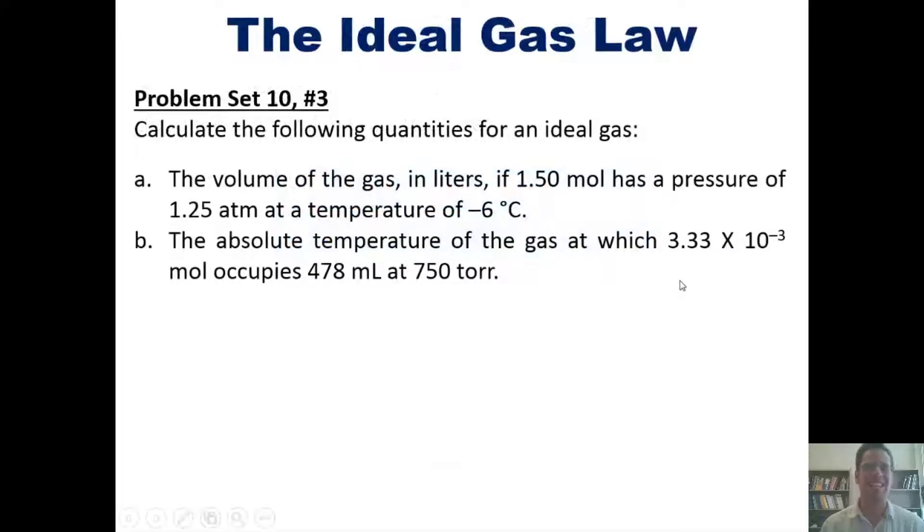That takes us to some awesome ideal gas law problems. I want you to calculate the following quantities for an ideal gas. Its volume in liters, if 1.5 moles has a pressure of 1.25 atmospheres at a temperature of negative 6 degrees Celsius. Then the absolute temperature of the gas at which 3.33 times 10 to the negative third moles occupies 478 milliliters at 750 torr.